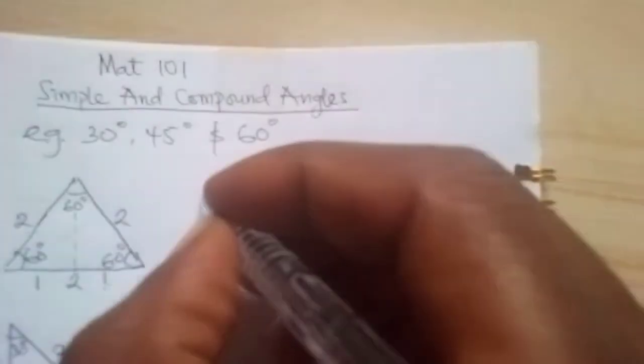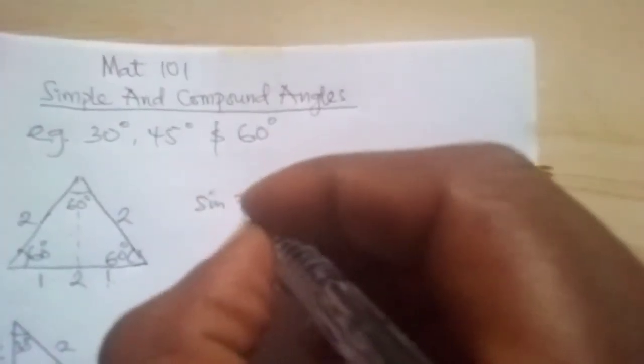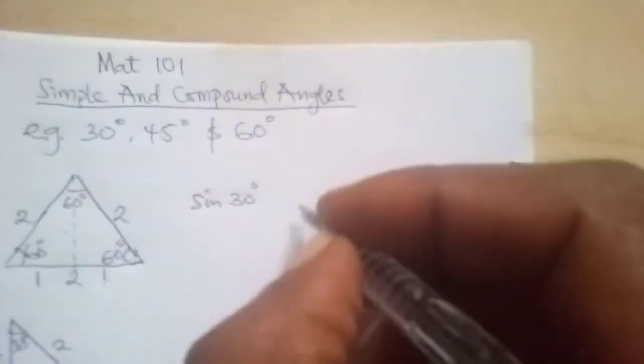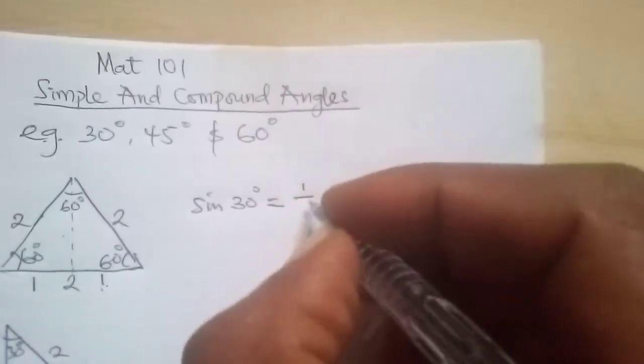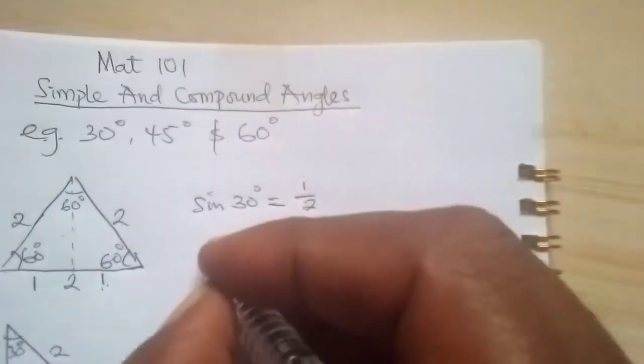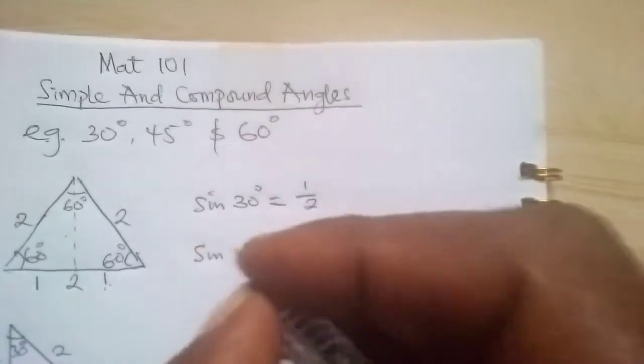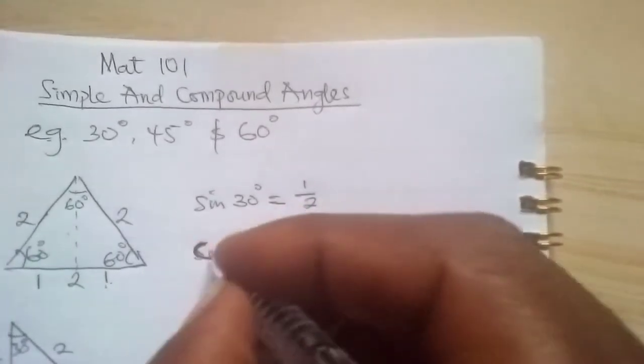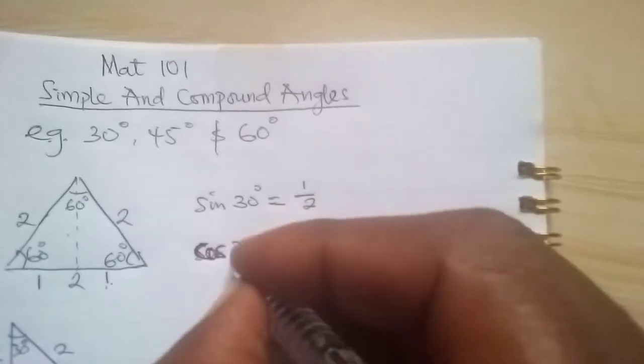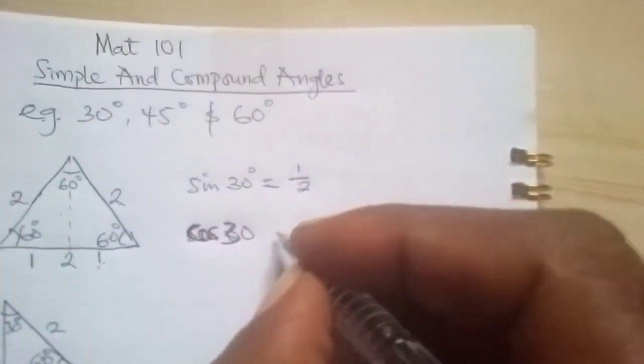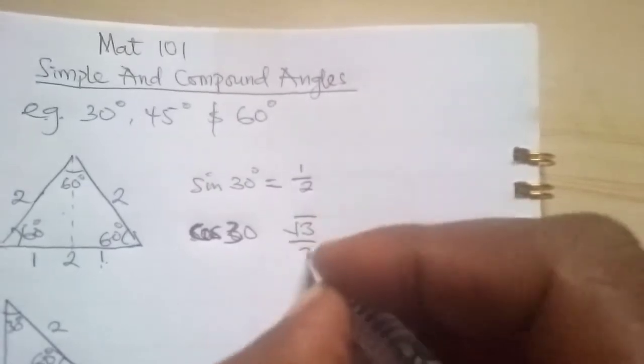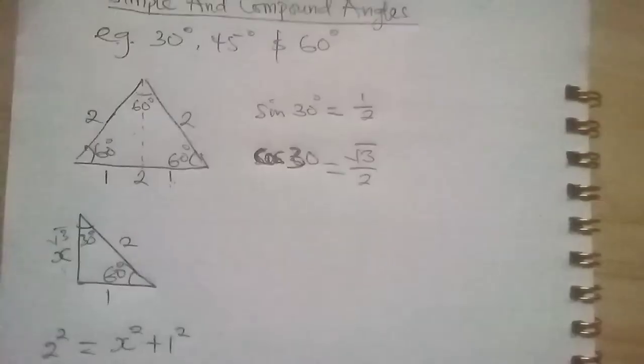Now let's go to 30. If we say sine 30 degrees, sine 30, which means opposite over hypotenuse, it will be 1 over 2. We can confirm that with the calculator. If we say cos 30, cos 30 will be adjacent over hypotenuse, which is root 3 over 2, and so on.